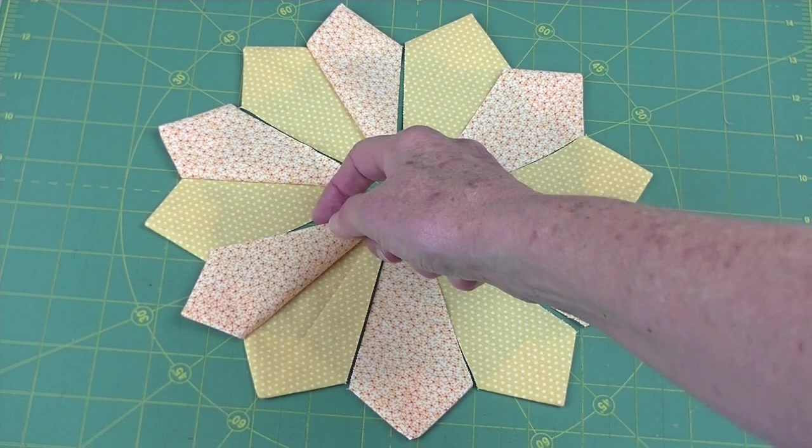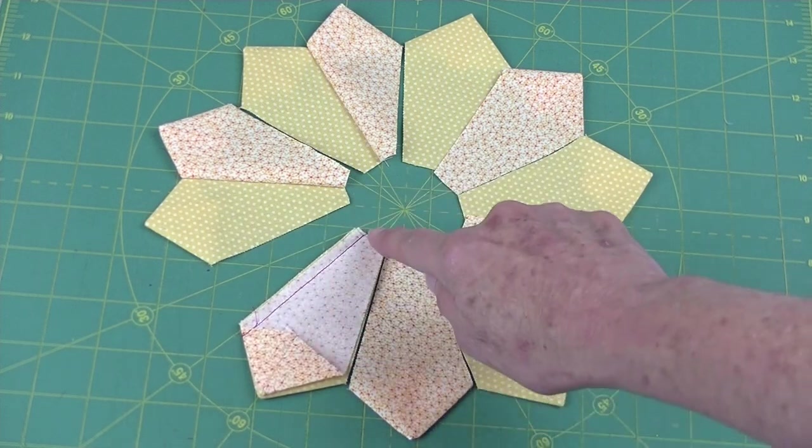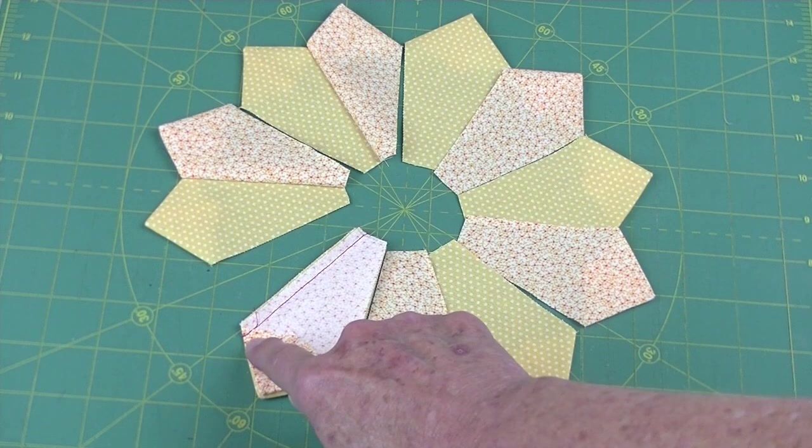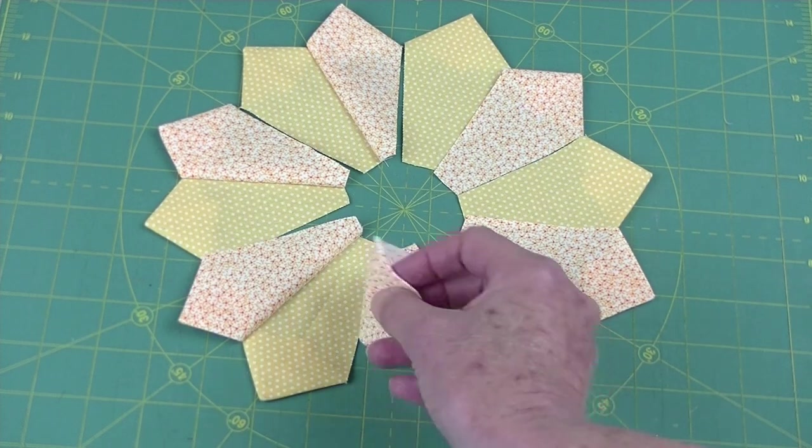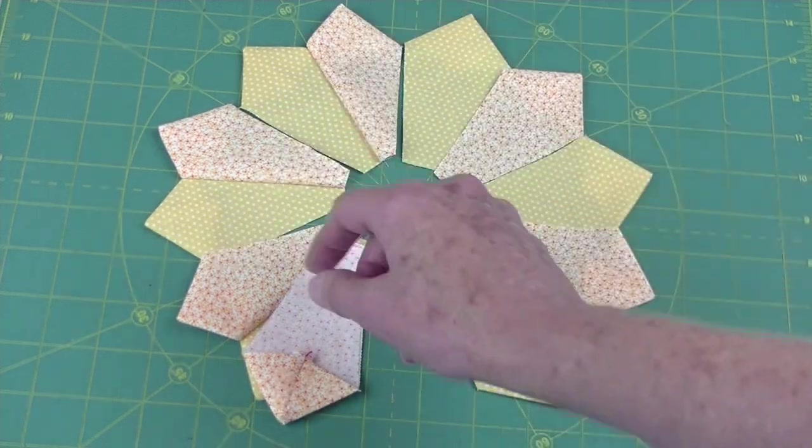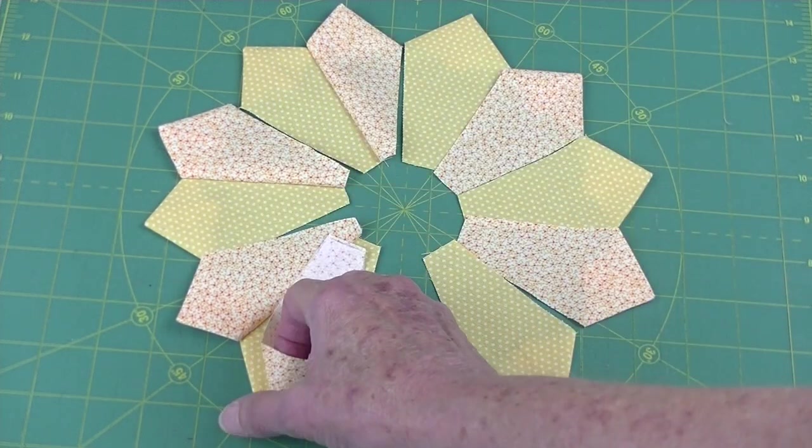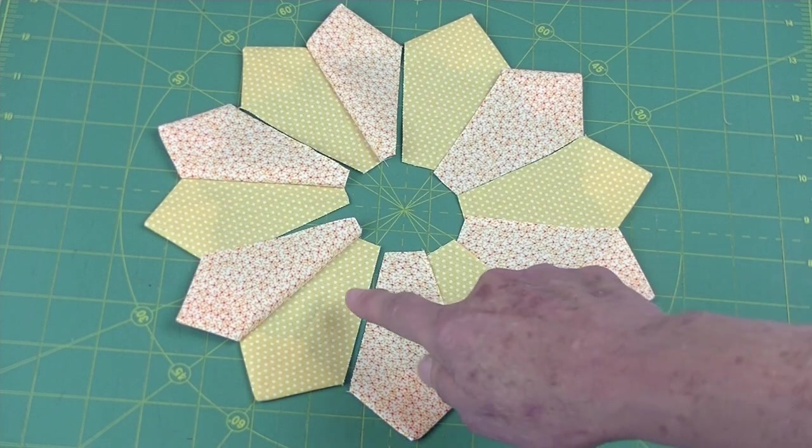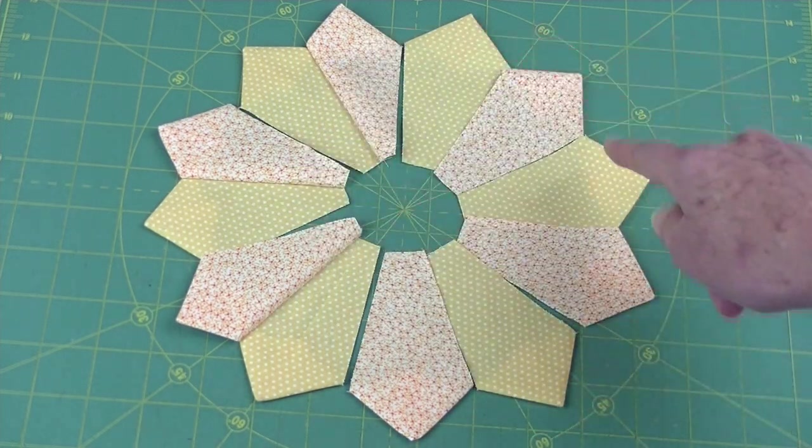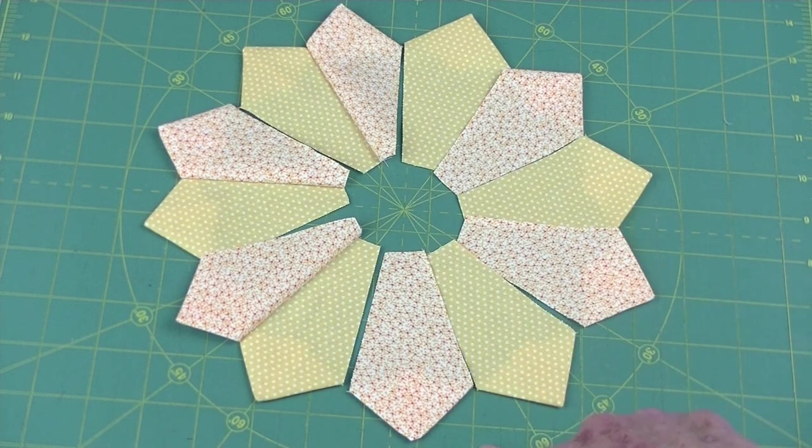Lay out your block. Put right sides together and stitch a quarter inch seam making sure to back stitch by the fold. Pick up the next petal, put right sides together and stitch, and continue in this manner until all the petals have been stitched together. Or as you can see I like to work in pairs and then sew these sections together until all the petals have been completed.